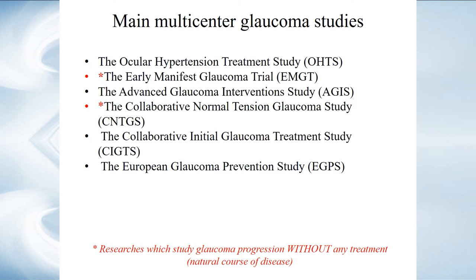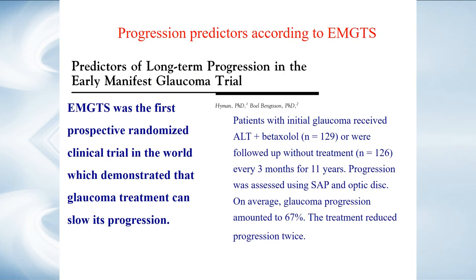You all know these trials; they are listed on this slide. Such as the ocular hypertension treatment study, advanced glaucoma study, collaborative initial glaucoma study, and normal tension glaucoma study. These studies had a control group in their design — patients whose glaucoma was not treated. Therefore, it was a unique opportunity to monitor the natural course of the disease and identify all risk factors associated with progression.